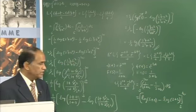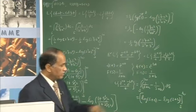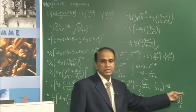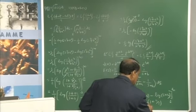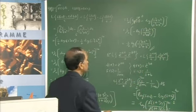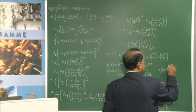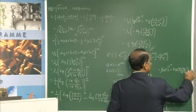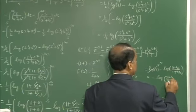Here also, substituting s = infinity gives log(infinity) minus log(infinity), which is indeterminate. To avoid this, we rearrange: log[s(1+a/s) / s(1+b/s)], evaluated from s to infinity. The s terms cancel, and when s = infinity, 1/infinity = 0, so the upper limit gives log(1) = 0. The lower limit gives minus log[(s+a)/(s+b)], so the final answer is log[(s+a)/(s+b)].